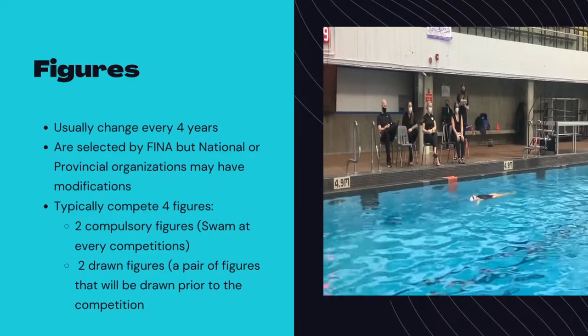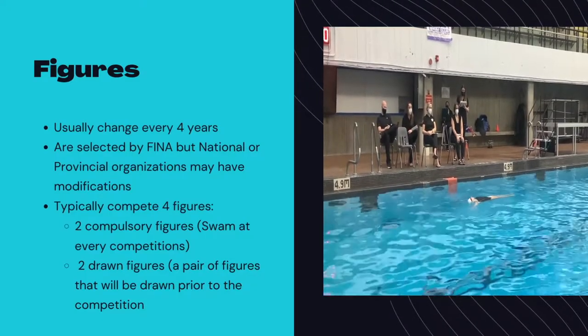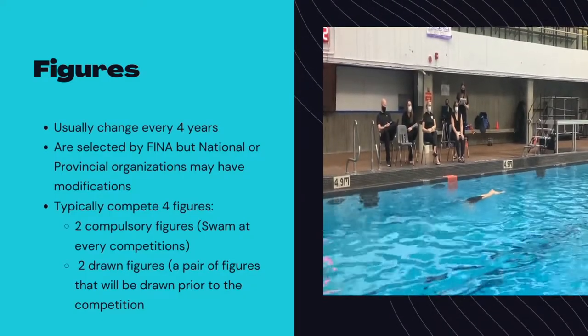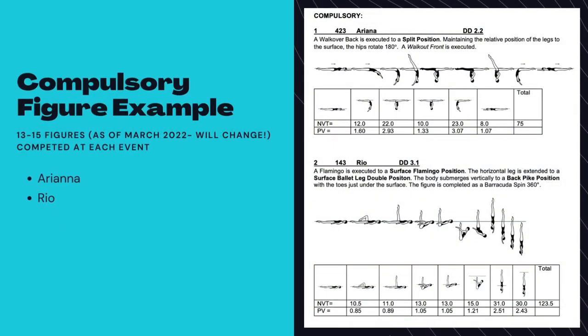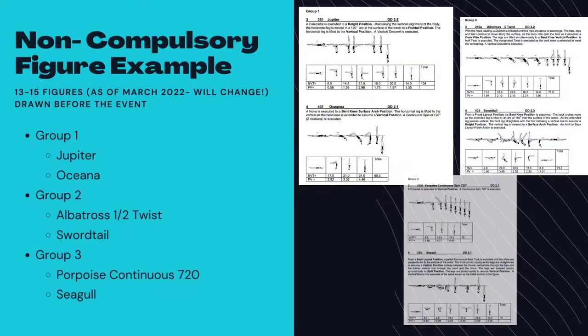Typically athletes compete four figures: two of which are compulsory and are swum at every competition, and two which are drawn. Compulsory figures are the same two figures swum at every competition. In the case of 13-to-15 figures, the compulsory figures are currently Ariana and Rio. These compulsory figures will change when a new set of figures is released. You can see here the pictures of Ariana and Rio provided in the FINA handbook, which is what coaches and judges refer to so that we're all on the same page about what's being competed.